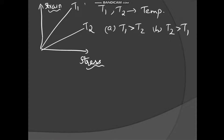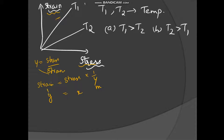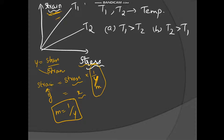Now consider a question where strain is along the Y-axis and stress is along the X-axis. We know Y = stress/strain, so strain = stress × (1/Y). Comparing with Y = M × X, the slope of the strain-vs-stress graph equals 1/Y — the inverse of Young's modulus. So slope is inversely proportional to Young's modulus for this type of graph.